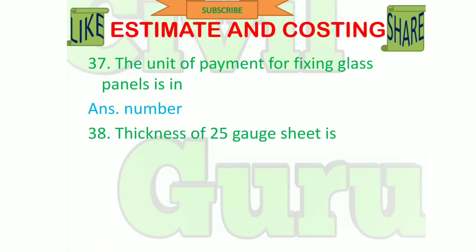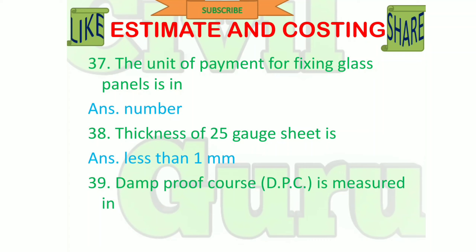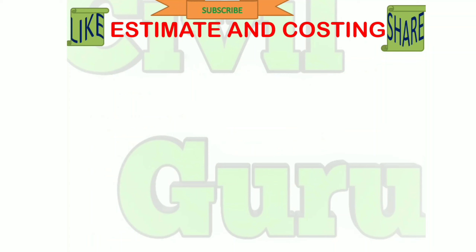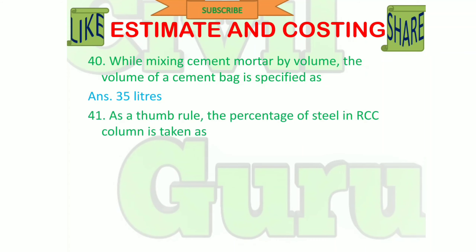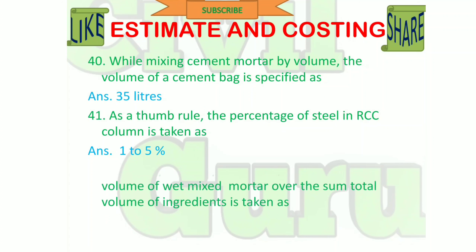The unit of measurement for fixing glass panels is in number. Thickness of 25 gauge sheet is less than 1 mm. Damp proof course is measured in square meters. While mixing cement mortar by volume, the volume of a cement bag is specified as 35 liters. As a thumb rule, the percentage of steel in an RCC column is taken as 1 to 5%. For analysis of rates, the reduction in volume of wet mixed mortar over the sum total volume of ingredients is taken as 25%.